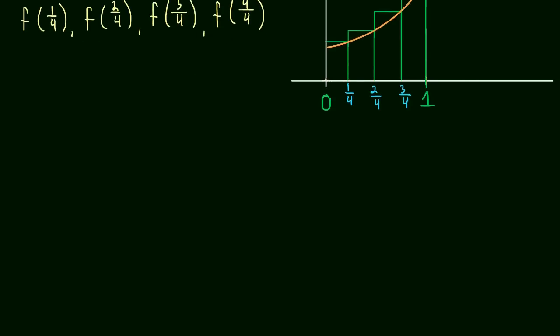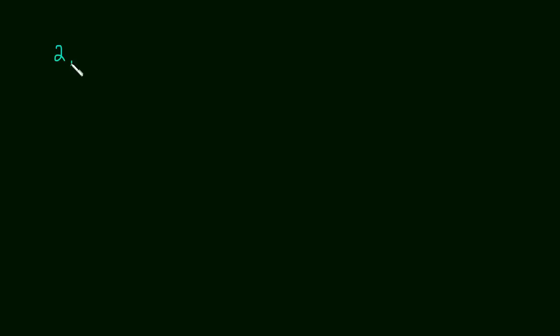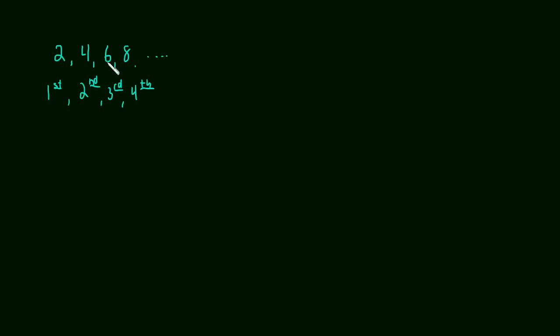Now there's something I want to sidetrack us on — just let's take a look at it. If I were to write out a list of numbers that looked something like this: two, four, six, eight, so on and so on, going on indefinitely. Obviously this is the first term, this is the second term, this is the third term, this is the fourth term. If I asked you for the fifth term, what is it?